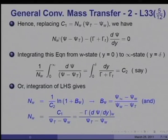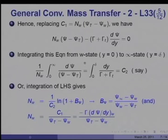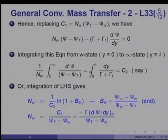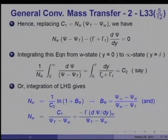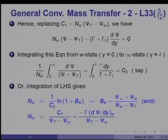Substituting C1 equals n_w·(psi_t minus psi_w) back into the equation, we get: n_w·(psi minus psi_t) minus (gamma plus gamma_t)·(d·psi/dy) equals zero. Integrating this from the wall state (y equals zero) to the free-stream state (y equals delta), we obtain: (1/n_w) equals integral from 0 to infinity of d·psi/(psi minus psi_t) equals integral from 0 to delta of dy/(gamma plus gamma_t), where gamma equals k/c_p for energy and rho_m times diffusivity for species transfer.